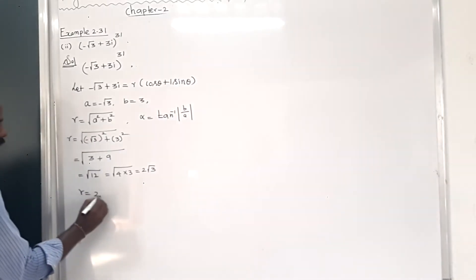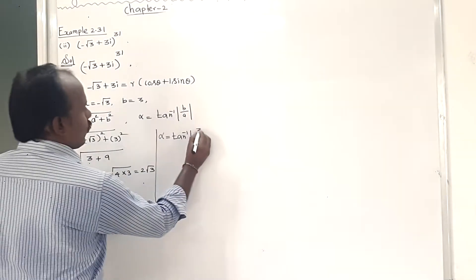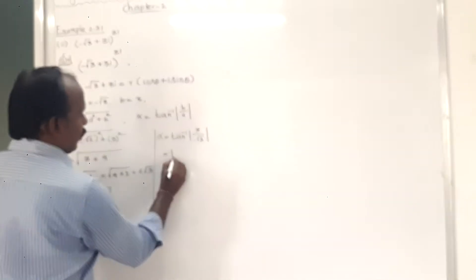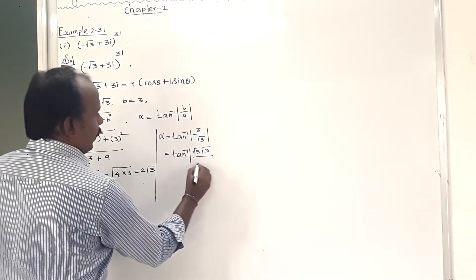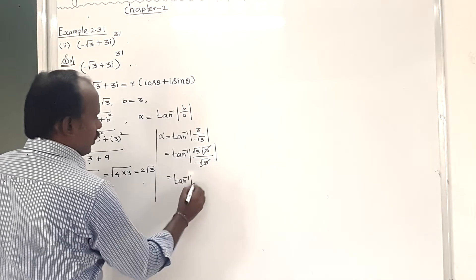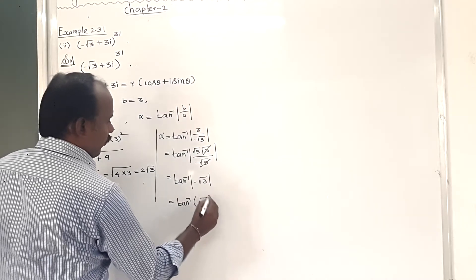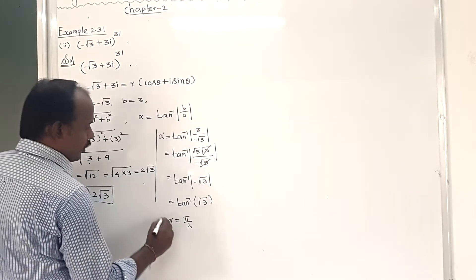So r = 2√3. Next, to find the value of alpha: alpha = tan⁻¹(|b/a|) = tan⁻¹(|3 / (-√3)|) = tan⁻¹(3/√3) = tan⁻¹(√3) — because the modulus cancels the minus. So alpha = π/3.